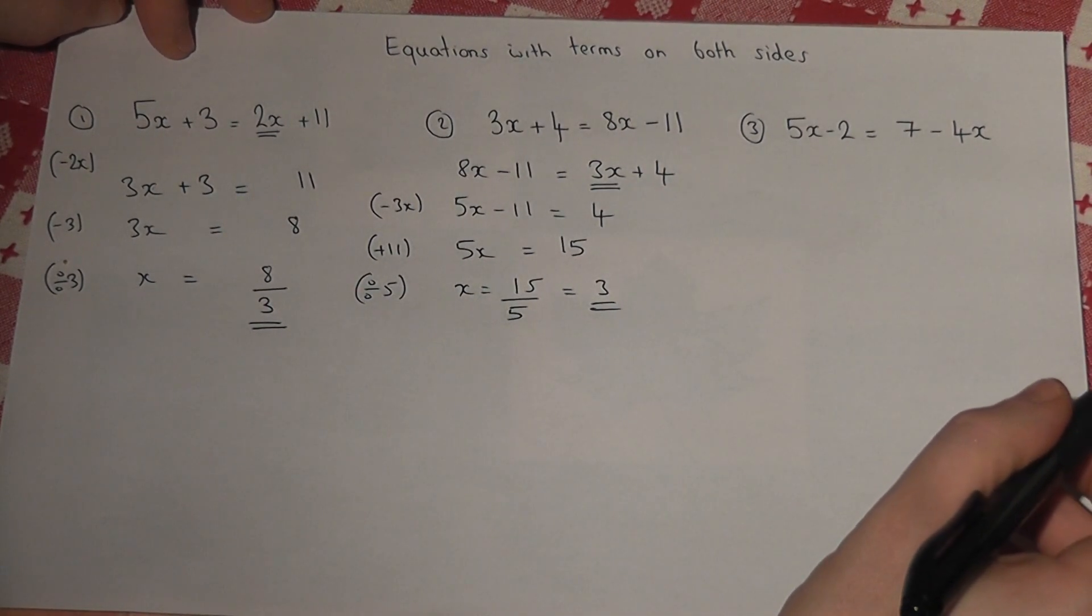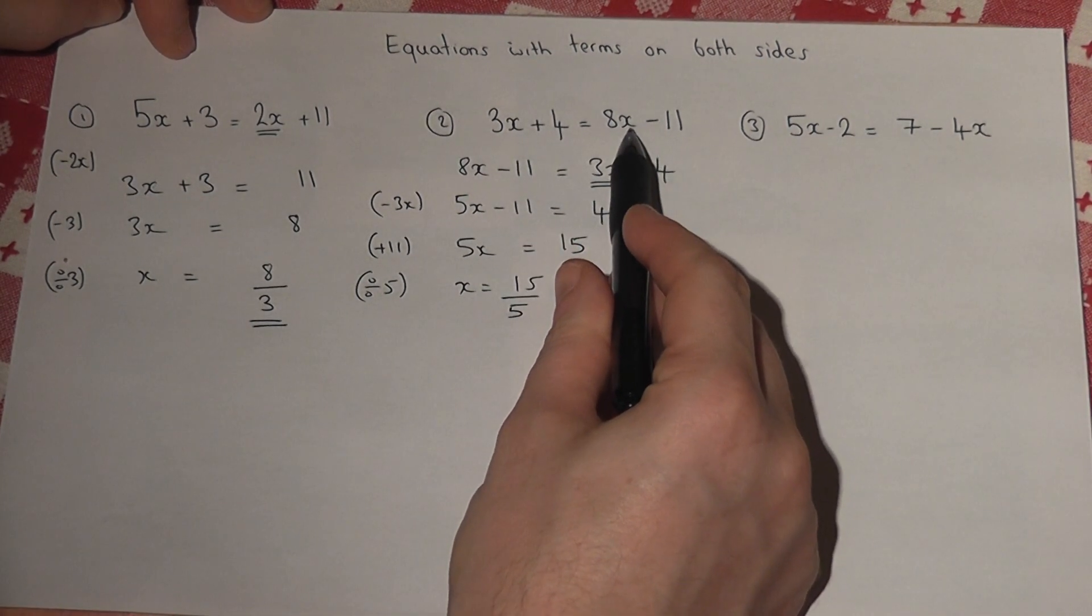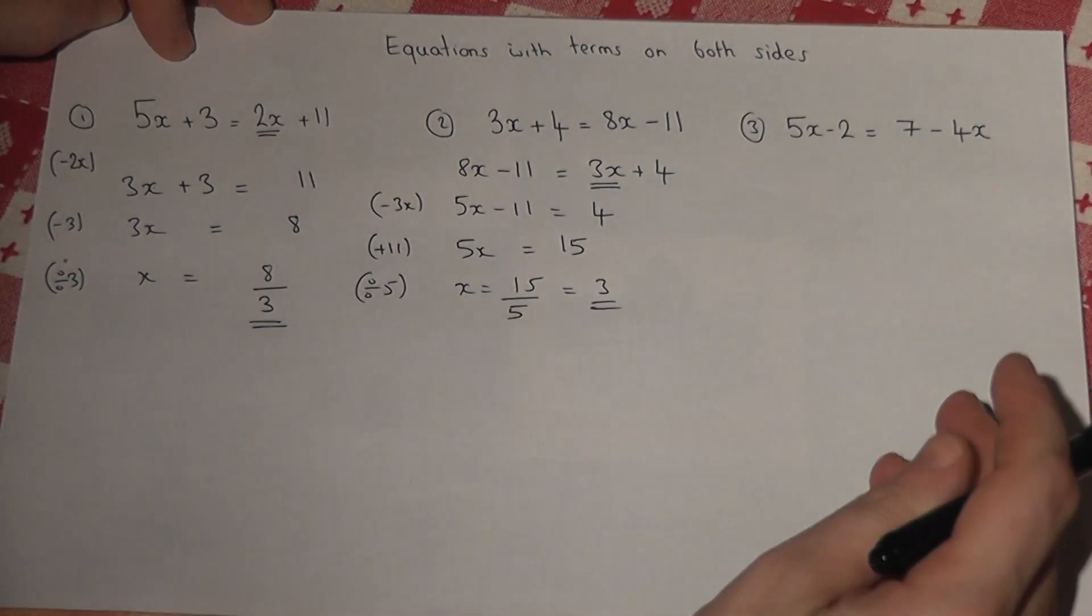So again, when you find there are more x's on the right hand side, it often helps to rewrite the equation with the two sides swapped around.